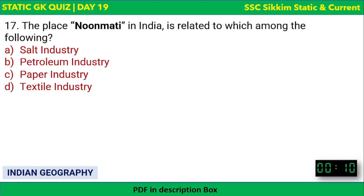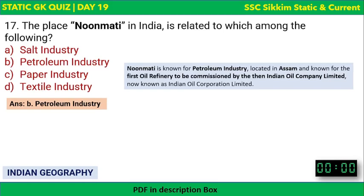Next question: The place Noonmati in India is related to which industry — salt, petroleum, paper, or textile? The answer is petroleum industry. Noonmati is in Guwahati, Assam, and is known for being the site of the first oil refinery commissioned by the then Indian Oil Company Limited, now known as Indian Oil Corporation Limited.